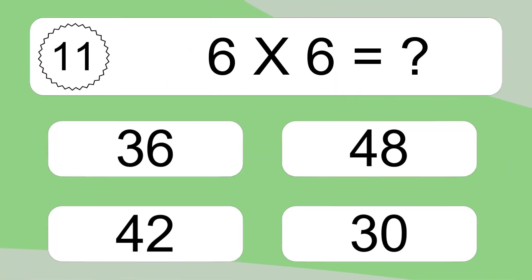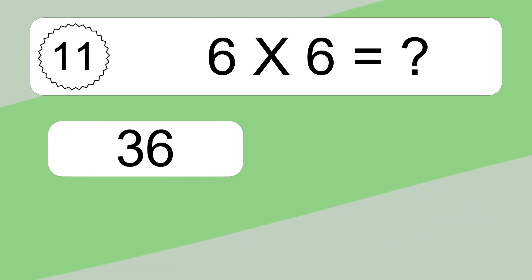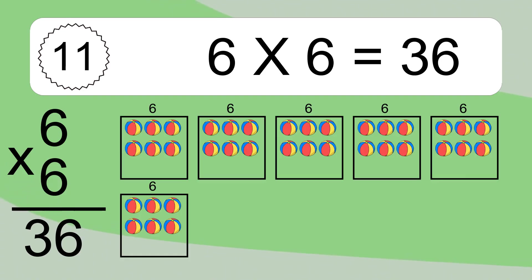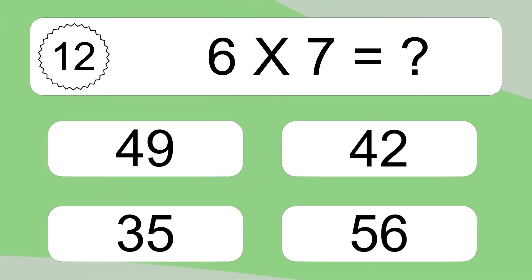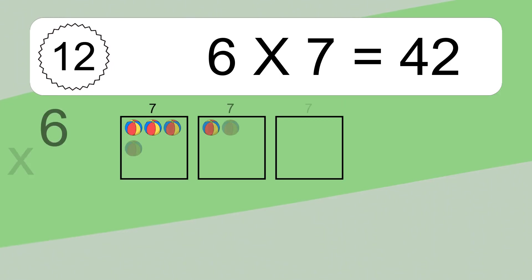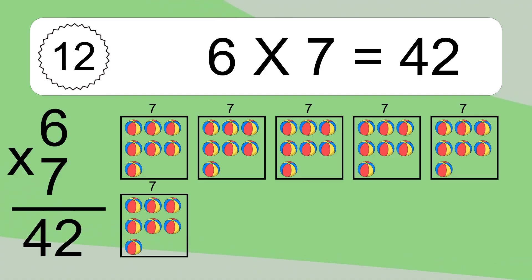Six times six equals what? Six times six equals 36. We have six boxes, and each box has six colorful balls inside. If you count all the balls in all the boxes together, you will have six times six balls. This equals 36 balls.